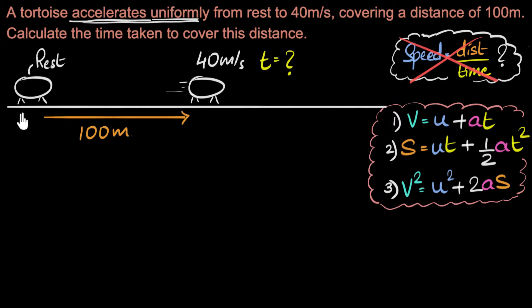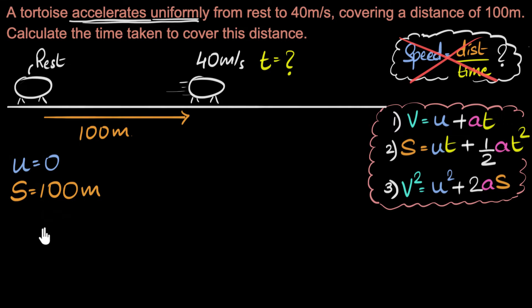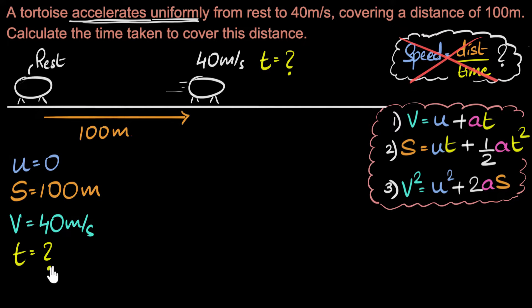The tortoise starts from rest, so the initial velocity U is zero. It travels 100 meters, so displacement S is 100 meters. We're also given the velocity at the end — the final velocity V is 40 meters per second. And we need to calculate T. Now look at the three equations and see which one would help, given these three values. Go ahead and give it a shot.